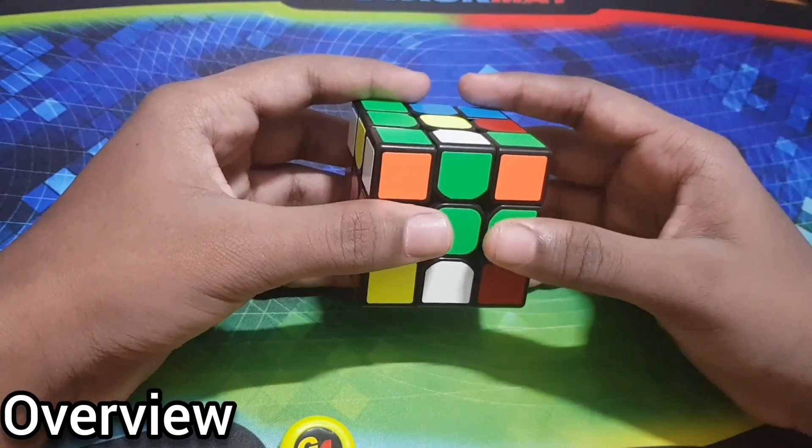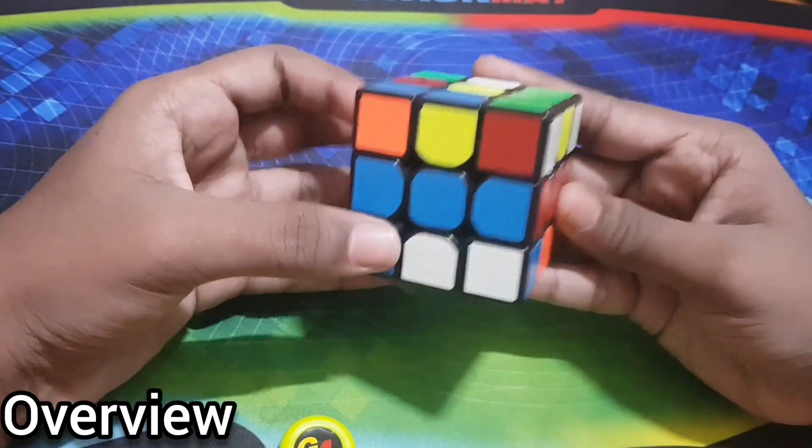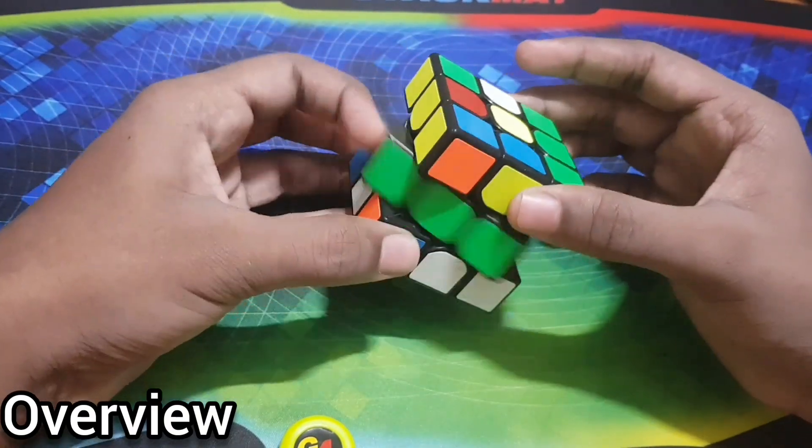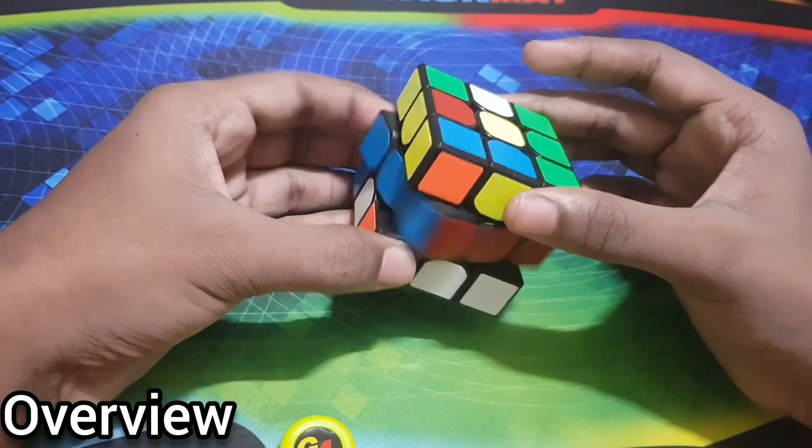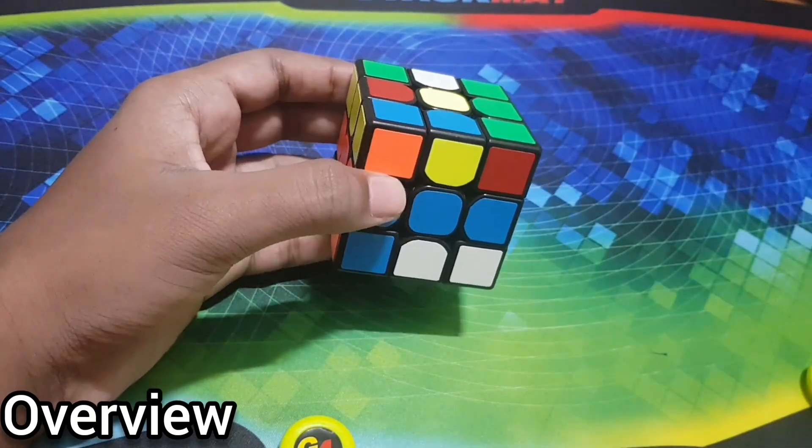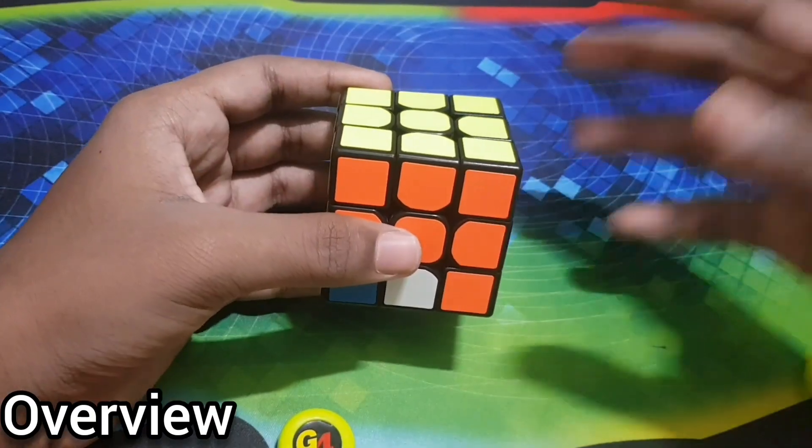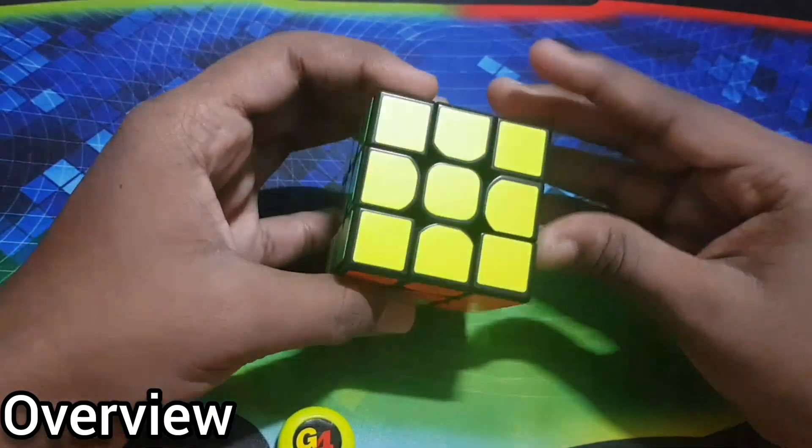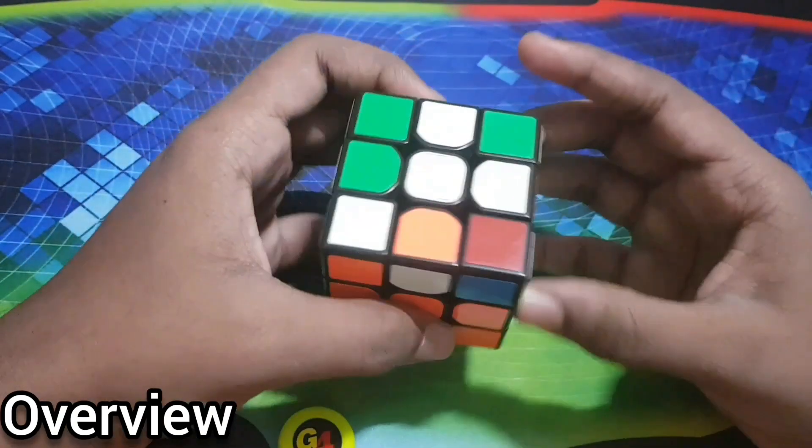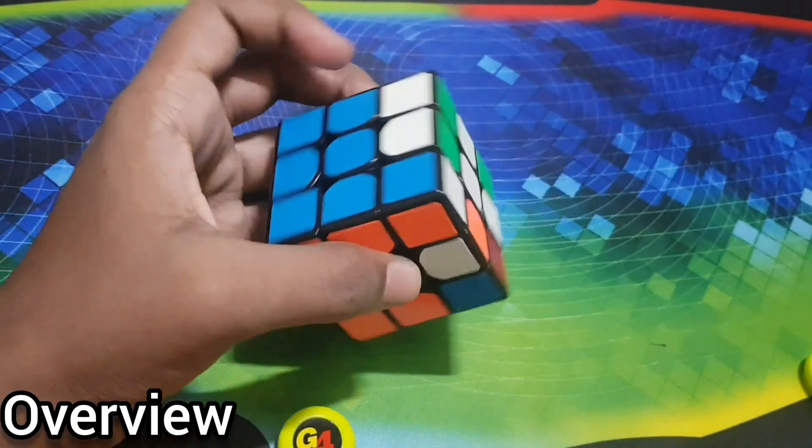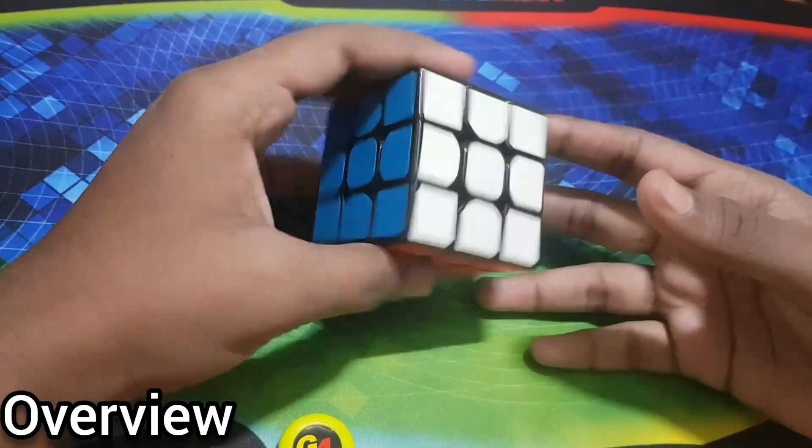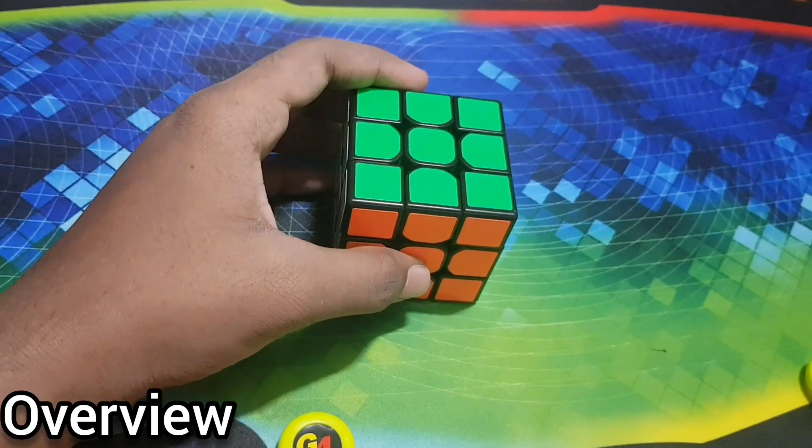First, let's get an overview of the method. The first step is to get all these center edges solved. The second step is to solve the top layer, and the third step is to solve the down layer and you get the cube solved.